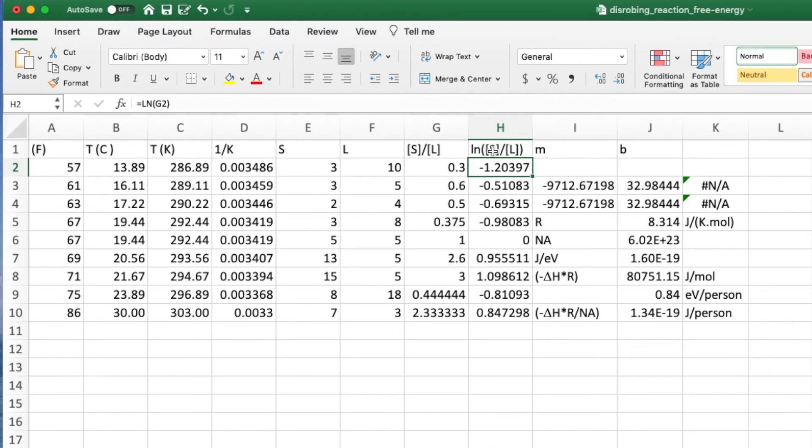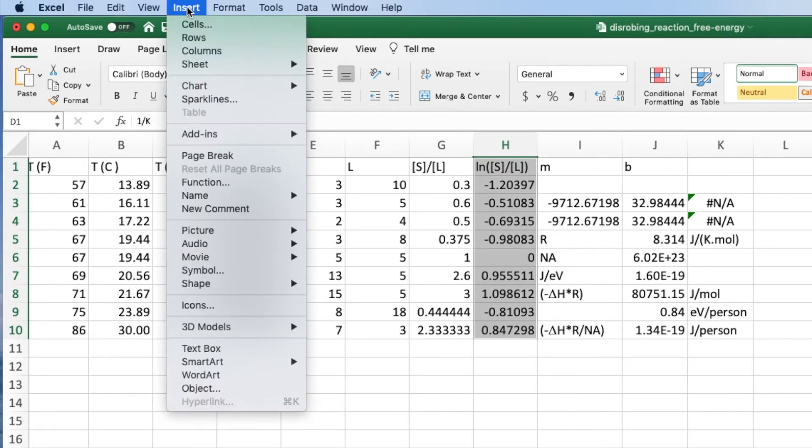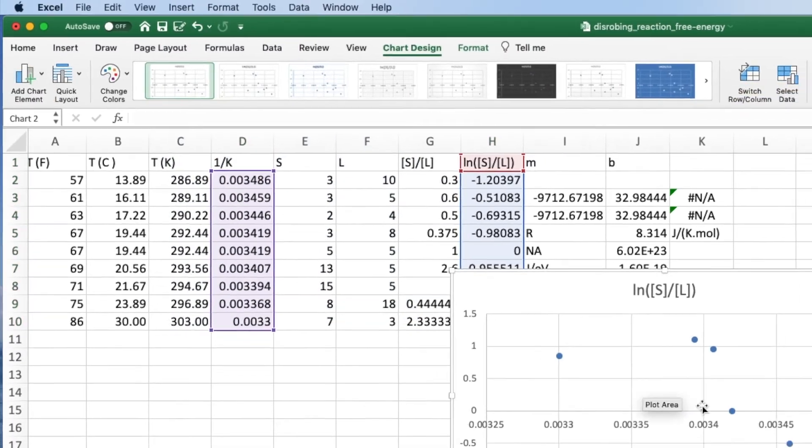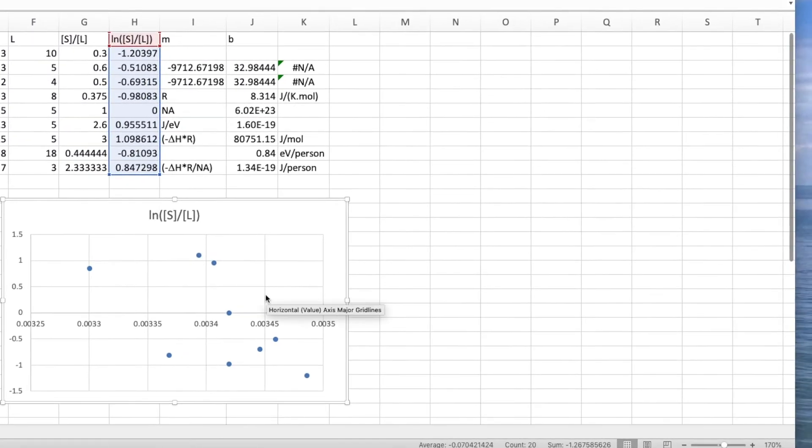Next, plot the log of the equilibrium constant versus the reciprocal of temperature. Fit the data into a straight line and extract the slope and intercept.